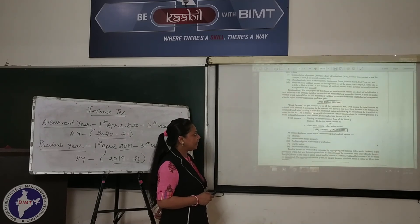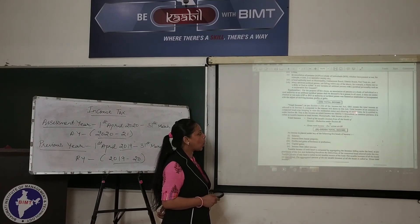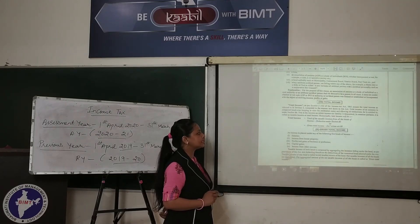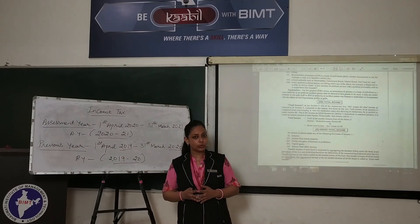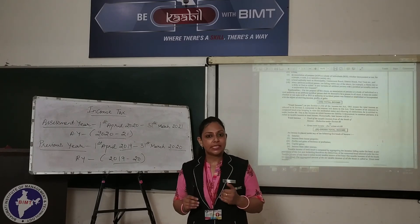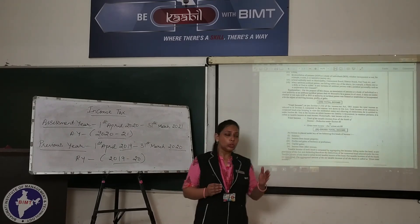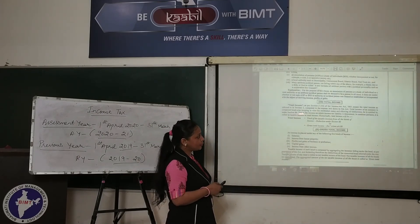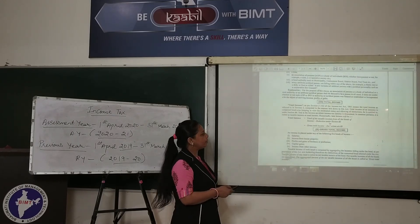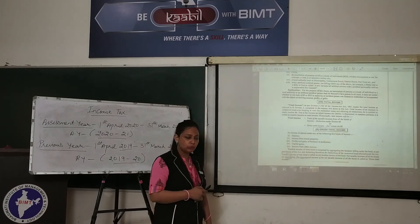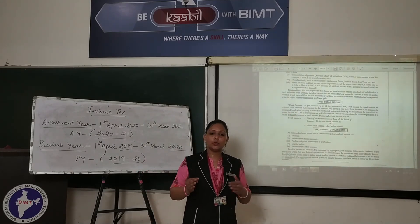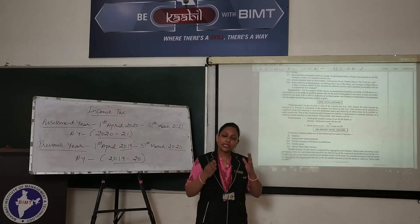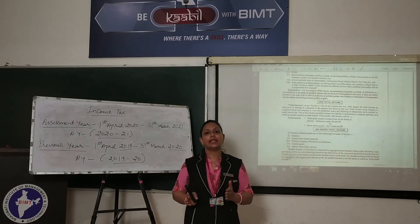This is the income on which income tax liability is determined. Total income is that income on which we calculate and pay income tax. In income tax there are five heads: income from salaries, income from house property, income from capital gains, income from business and profession, and income from other sources. So when we compute income head-wise and total it up — that is the total income.